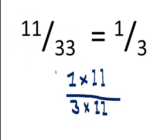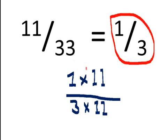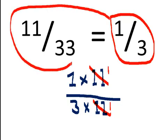Let's take a look at another example. Here we have 11 thirty-thirds. Well, 11 thirty-thirds is also a way of writing 1 third. We can do that by multiplying 1 times 11 and 3 times 11. That gives us an 11 in the numerator and an 11 in the denominator — it just becomes the number 1. So 1 times 1 is 1, and 3 times 1 is 3. So 11 thirty-thirds and 1 third are equivalent fractions — they're the same amount of stuff.